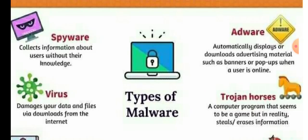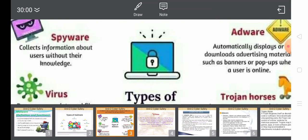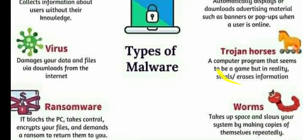Next is Adware, which basically comes from the word advertisement. It automatically displays or downloads advertising materials such as banners and pop-ups when a user is online. Next is Trojan Horse — a computer program that seems to be a game but in reality steals or erases information. Last is Worms: they replicate files within computer systems, detect free space, and slow your system by making copies of themselves repeatedly.